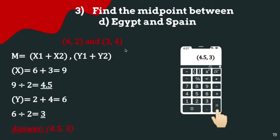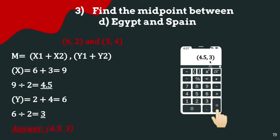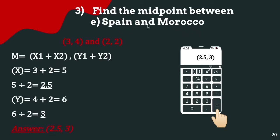Find the midpoint between Egypt (6, 2) and Spain (3, 4). Using the midpoint formula: x = (6 + 3)/2 = 9/2 = 4.5, and y = (2 + 4)/2 = 6/2 = 3. The overall answer is (4.5, 3).